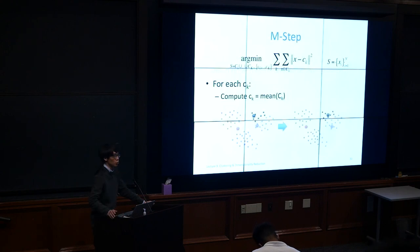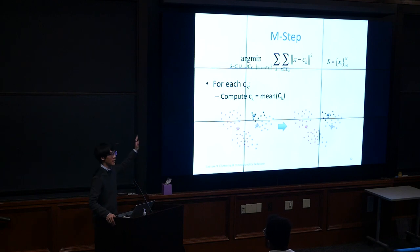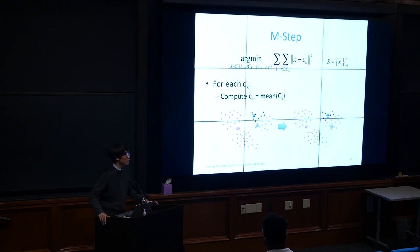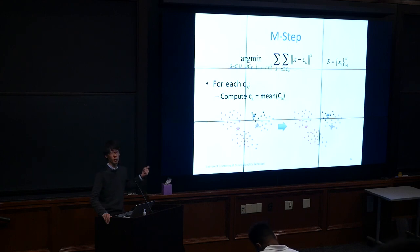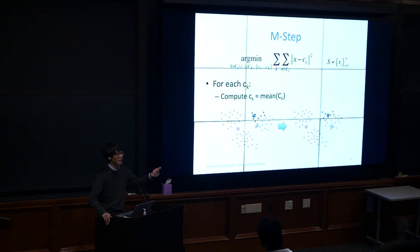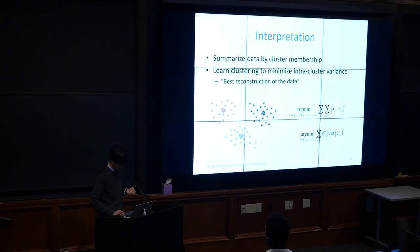If you don't know K, you can sweep different values of K and pick the one that minimizes global variance. The complexity of K-means is big O of N times K times R times D (data points, clusters, iterations, dimensionality all multiplied), so it gets expensive quickly with large datasets.